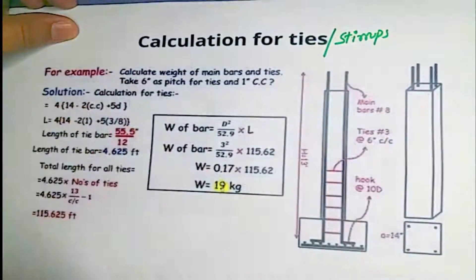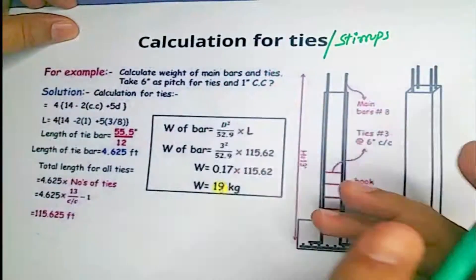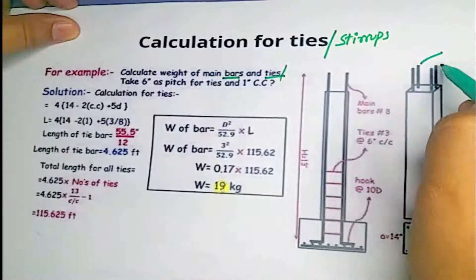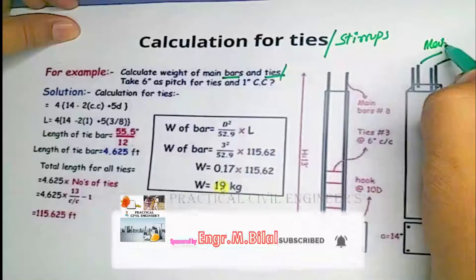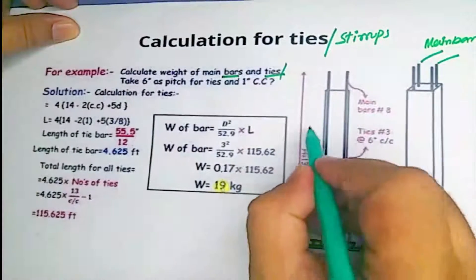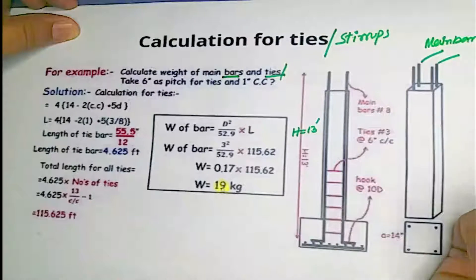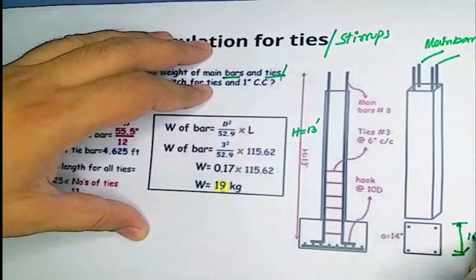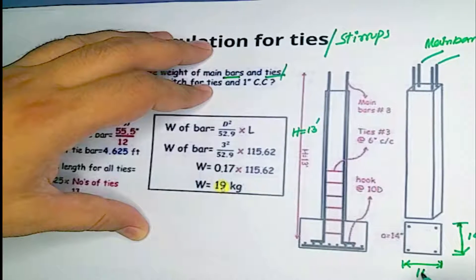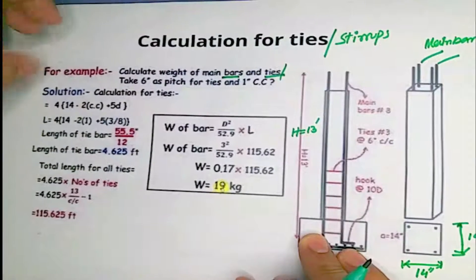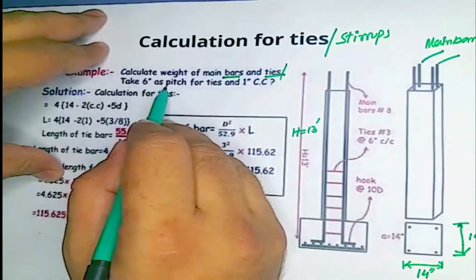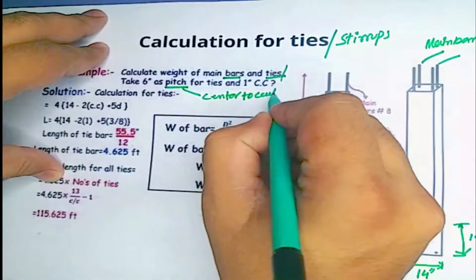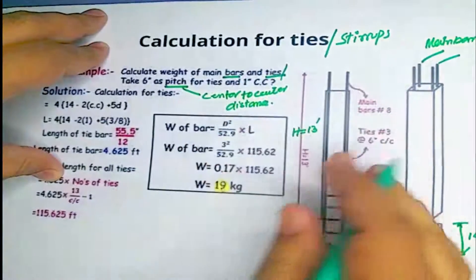For example: calculate the weight of main bars and ties (stirrups). There are four main bars. The total height of the column is 13 feet, and the cross-section of the column is 14 inches by 14 inches. Take 6 inches as the pitch, which means center-to-center distance.